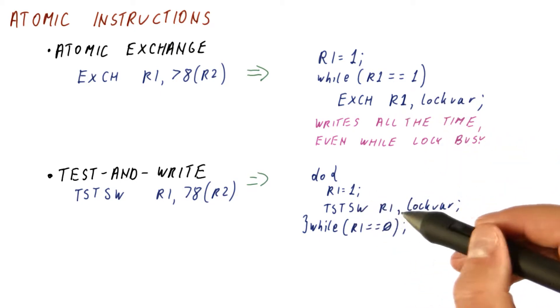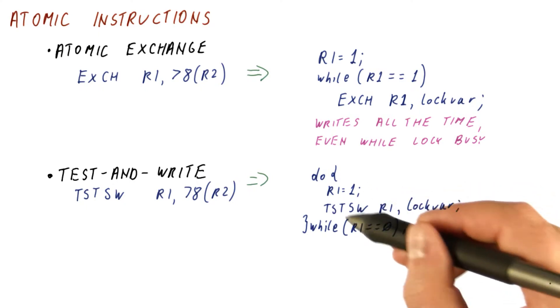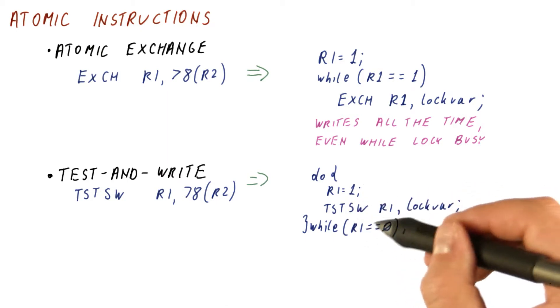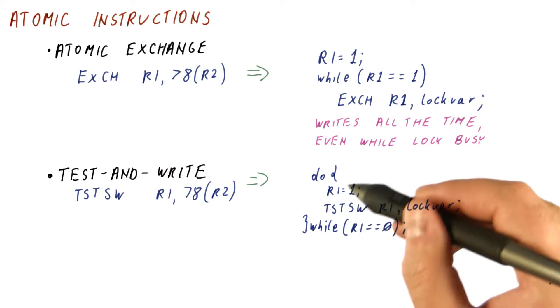In contrast, the test and store, everybody that is waiting while the lock is occupied simply gets to share the lock variable. They're all having it in the shared state and simply iterating on their cached copy.